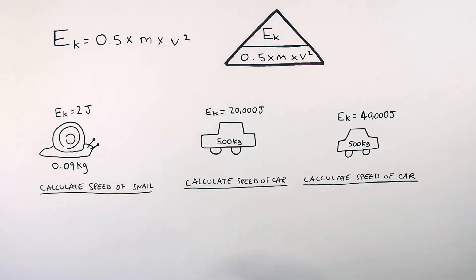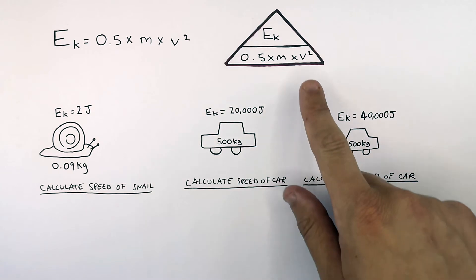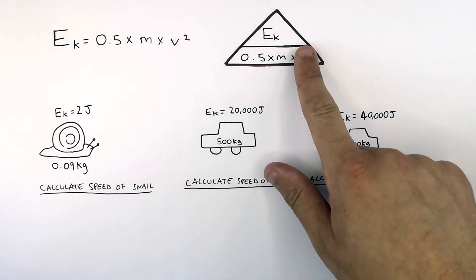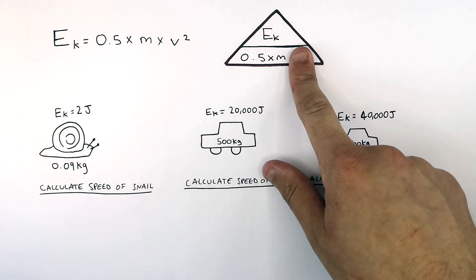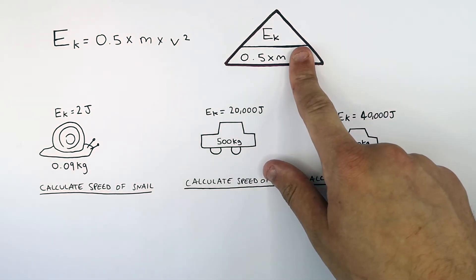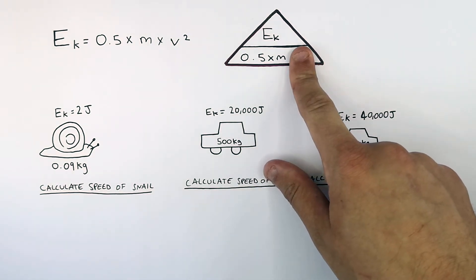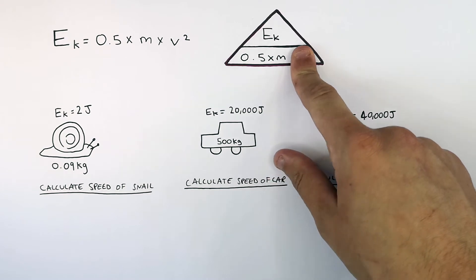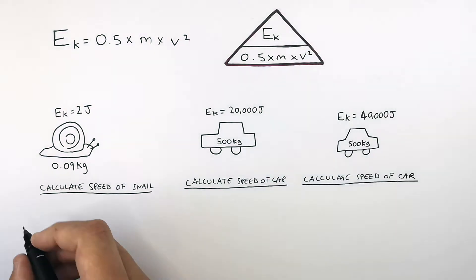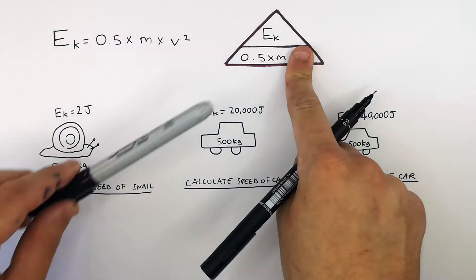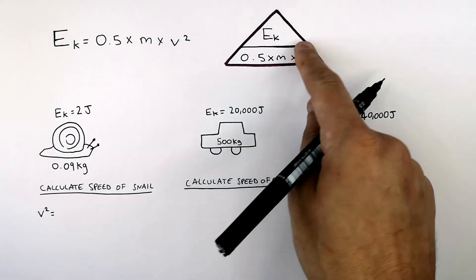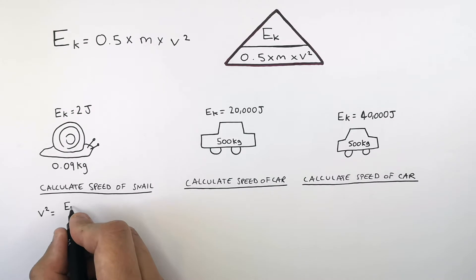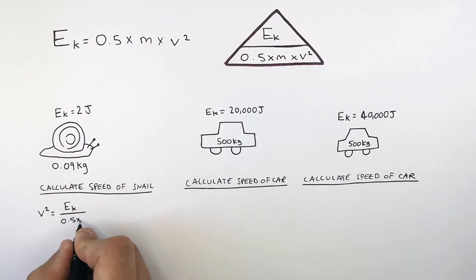So we're trying to work out the speed, V. To work out V, we firstly need to cover V squared. So V squared equals kinetic energy divided by 0.5 times mass.